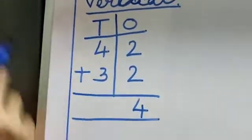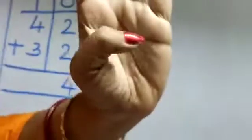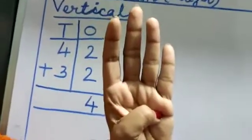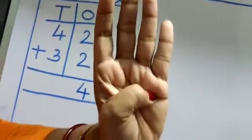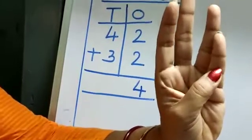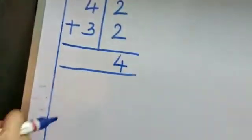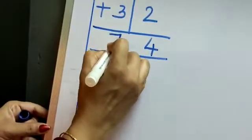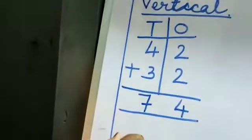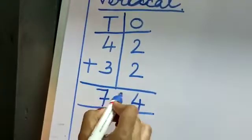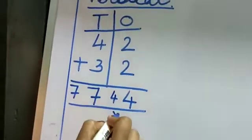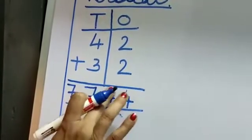4 plus 3. How we will count? 4 I will keep here to remember. After 4, you have to count 3. After 4, what number comes? 5, 6, 7. So, I will write 7. Maintain the 1s line. Maintain the 10s line. If you will write here 4, you will write here 7. No. This is wrong process. Don't do it.